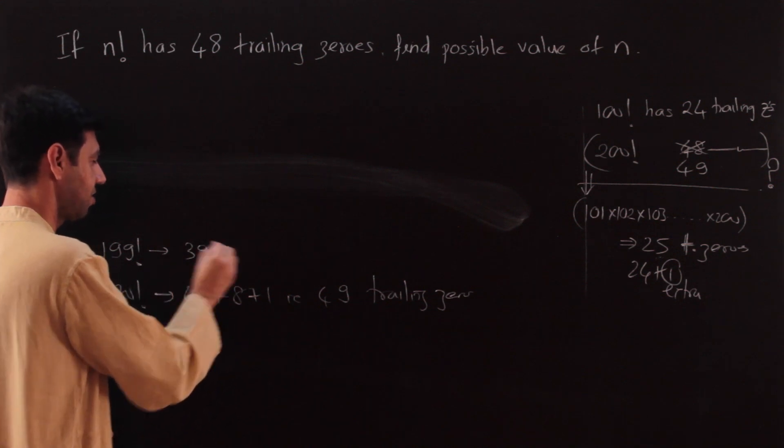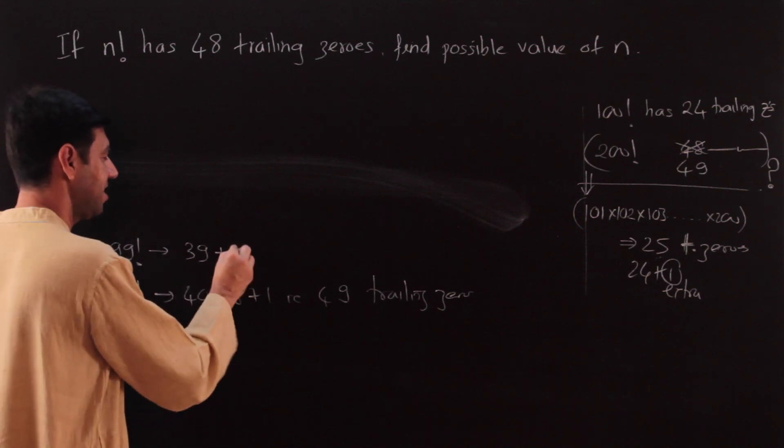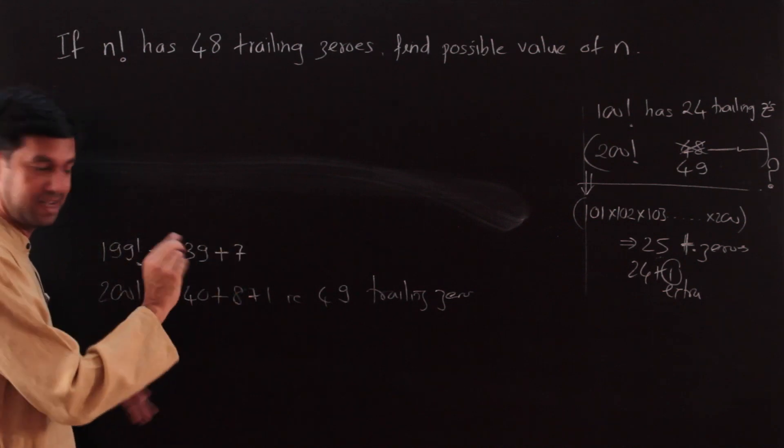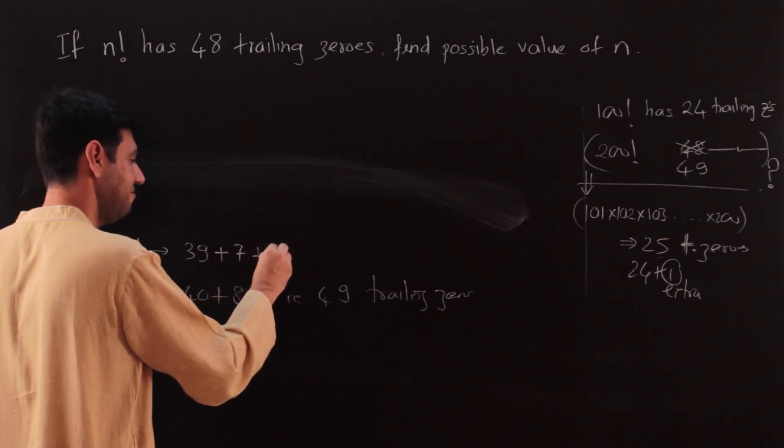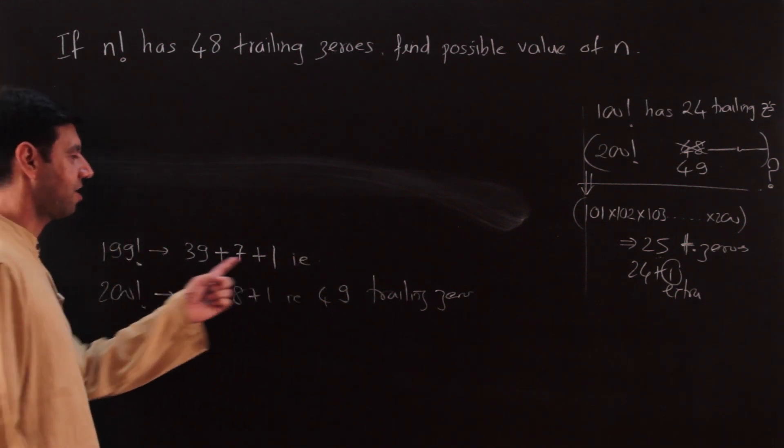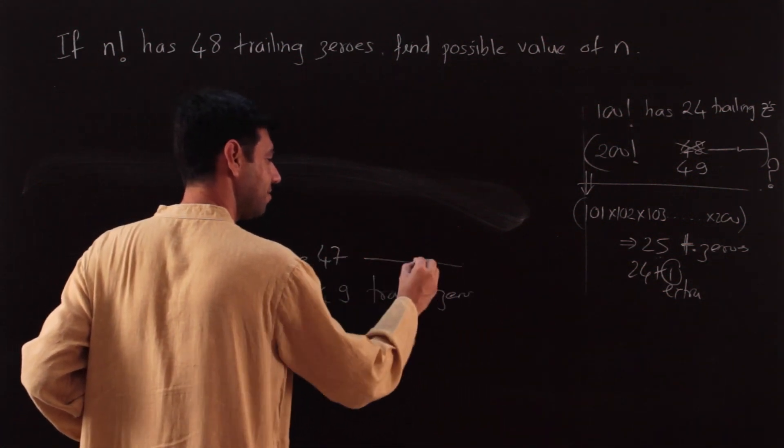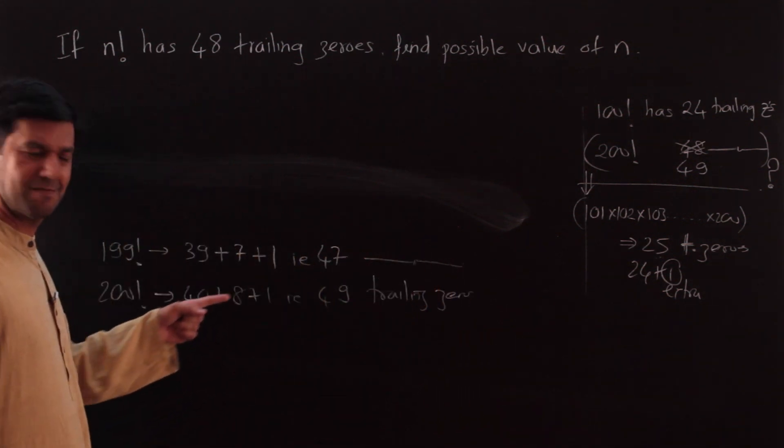5 times 3 is 15, from 199, so 39 is left over. We ignore the decimal part. 39 is divisible by 5: 5 times 7 is 35, ignore the decimal part. 7 is divisible by 5, yes. So this is 39 and 7 and 1, which is 47. This has 47 trailing zeros.